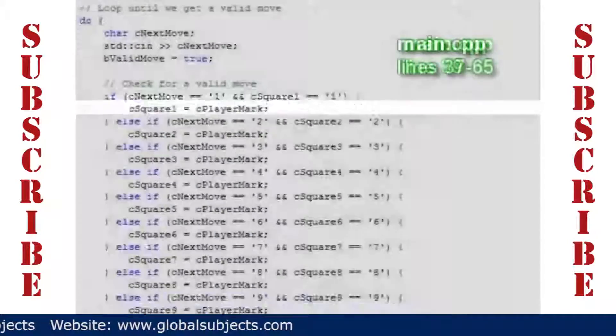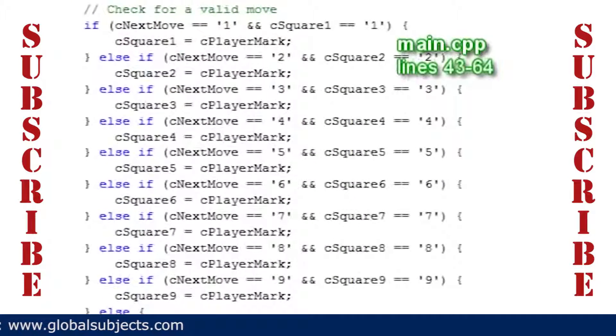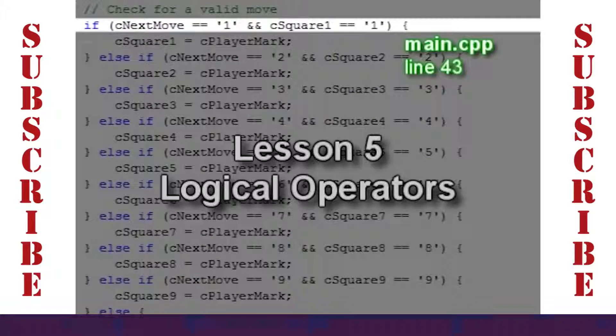Notice that we've entered another loop. This loop runs until the player enters a valid move. The check for a valid move is pretty large since it has a branch for each square. Each branch of the if statement makes two checks.